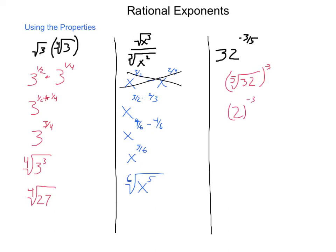2 to the negative third power, well, 2 to the third power is 8, so we end up with 1 divided by 8. 1 eighth is equivalent to 32 to the negative three fifths power.